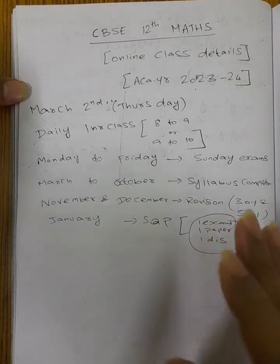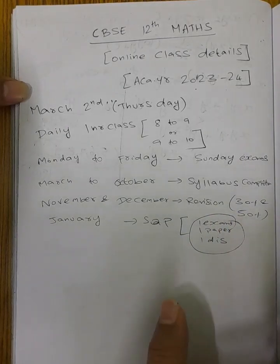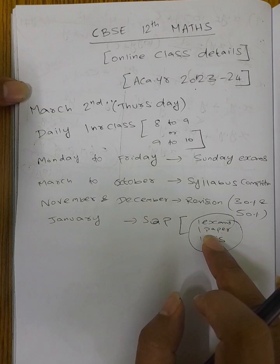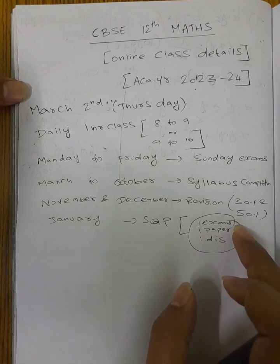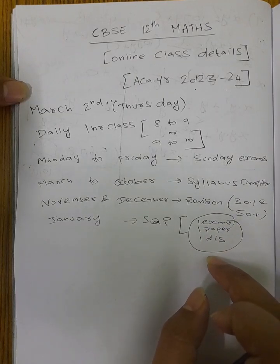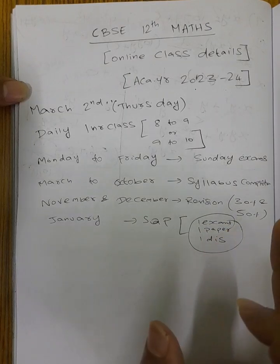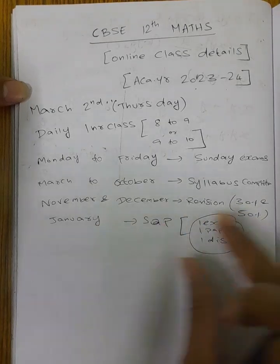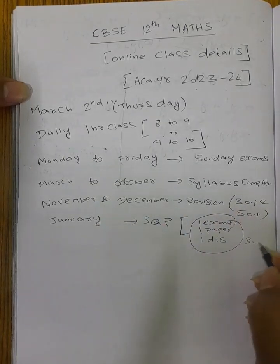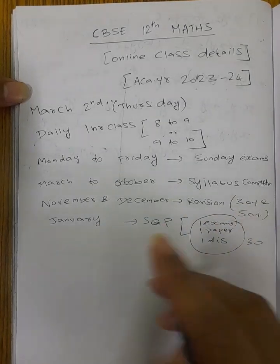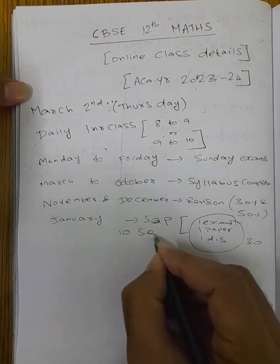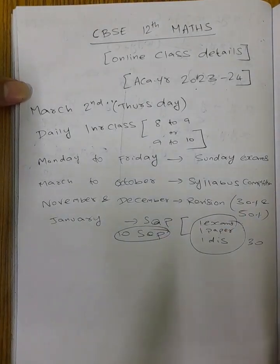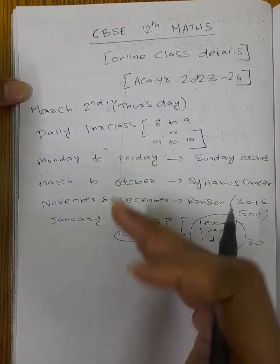This is the 3-day planned structure. For 12th students — past 2-3 years — the first day is the exam. You will send a paper for correction, you will send a key. The third day is discussion and doubt clarification. So in January month, a 3-day split: 1 month, minimum 10 sample question papers. In February, you can send the exam — 10.